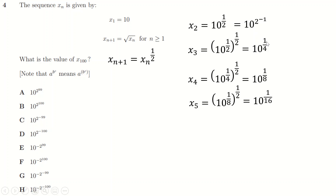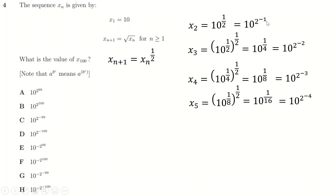A quarter is 1/2² = 2^(-2), an eighth is 1/2³ = 2^(-3), and a sixteenth is 2^(-4). The pattern is that x_n = 10^(2^(-(n-1))): the index in the exponent is always one less than the subscript of x. So x₁₀₀ = 10^(2^(-99)).